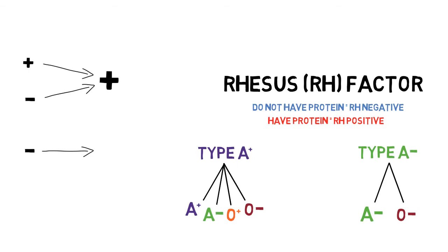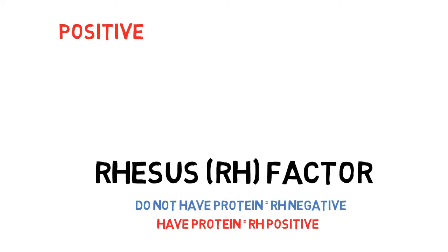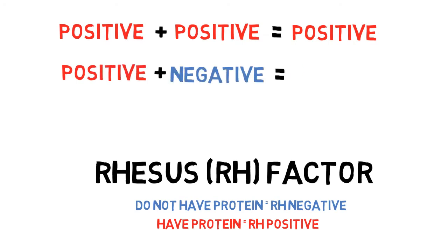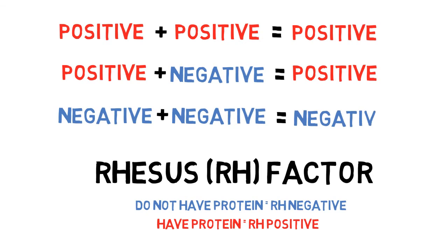As with your actual blood type, your Rh factor is determined by your parents. They can send you either a positive or a negative based upon what they themselves have. And like with the O blood type, the negative Rh factor is always naturally recessive. So any combination other than two negatives from your parents will always result in a positive Rh factor. Once more, it becomes a game of probability and chance.